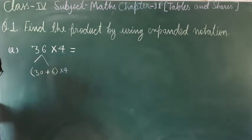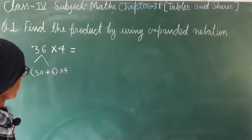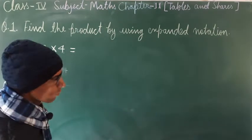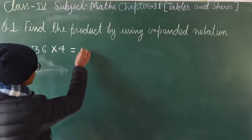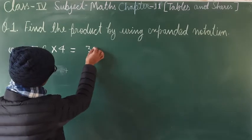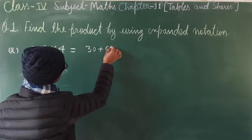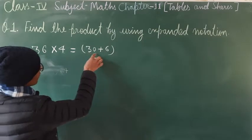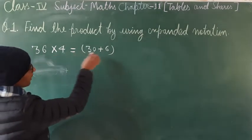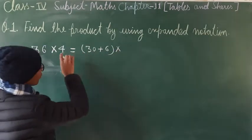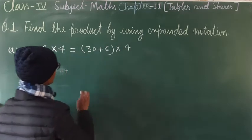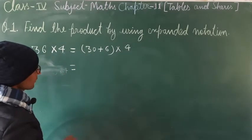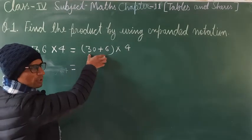First step: we will write 36 in expanded notation form. So 36 becomes (30 + 6), then multiply by 4. So (30 + 6) × 4.